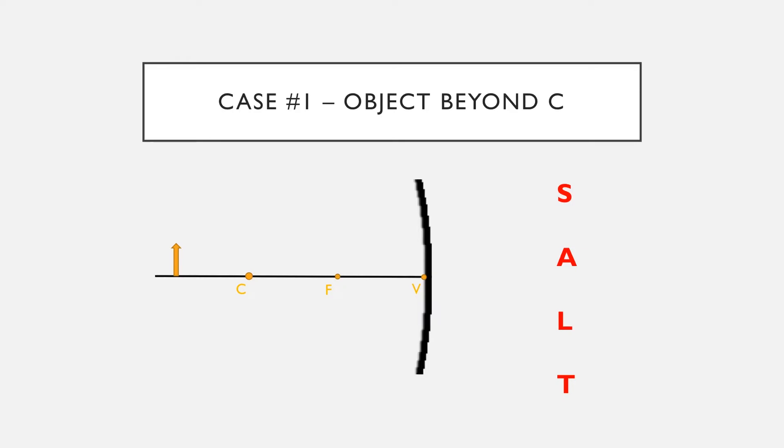First things first is we're going to draw our first line, which is going to come from the top of the object, parallel to the principal axis, and it's going to make contact with our mirror. Next step is that because that one is parallel, the resultant ray is going to go through our F. So there is the first set of rays that's going to help us determine where the image is going to result.